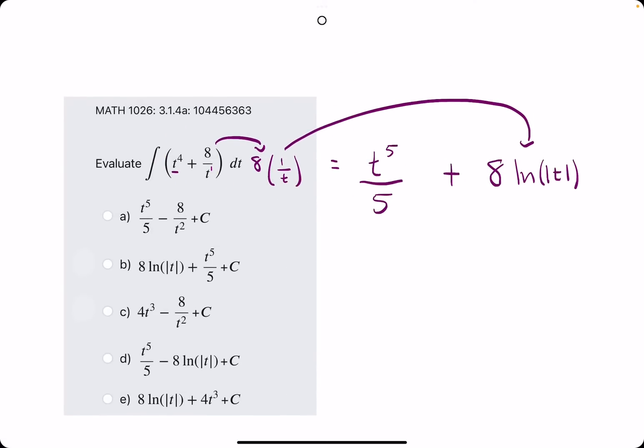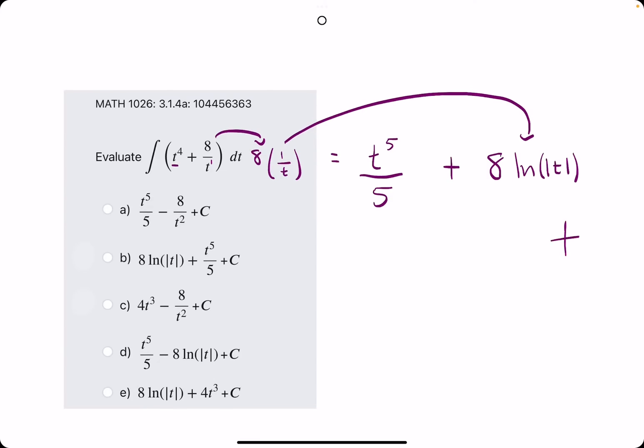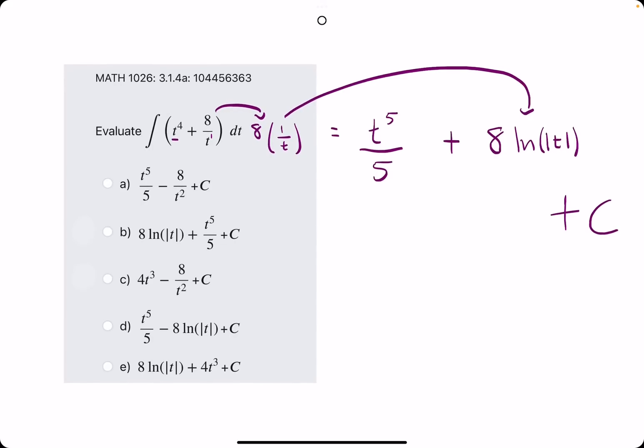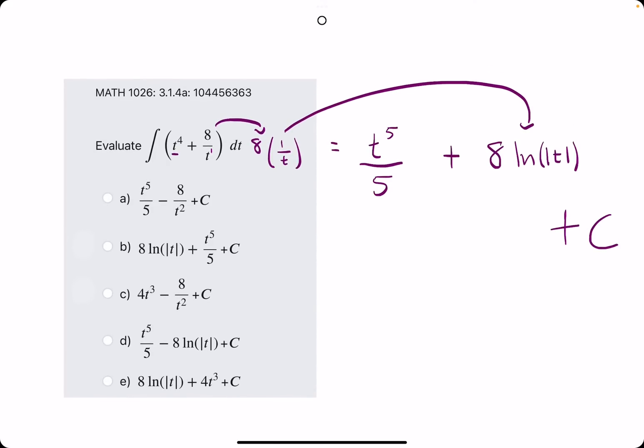I think I just talked in circles for a minute. I hope that makes sense. So we're looking for this answer. Of course, you have to have plus C. We're looking for not this, maybe B, not this, and not this, not that. Looks like B is our answer.